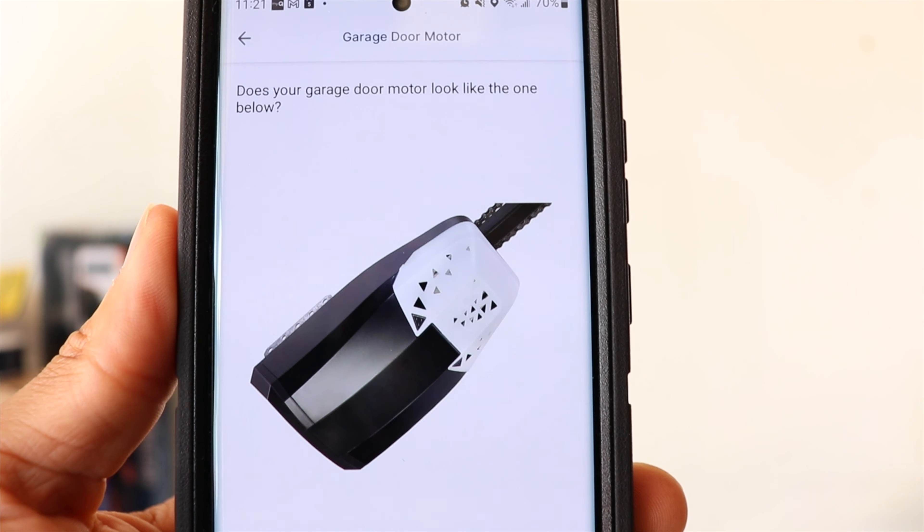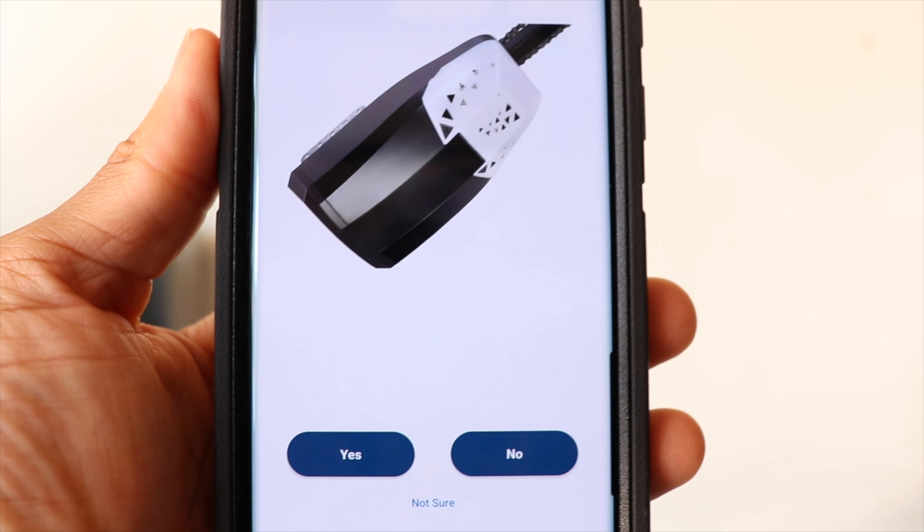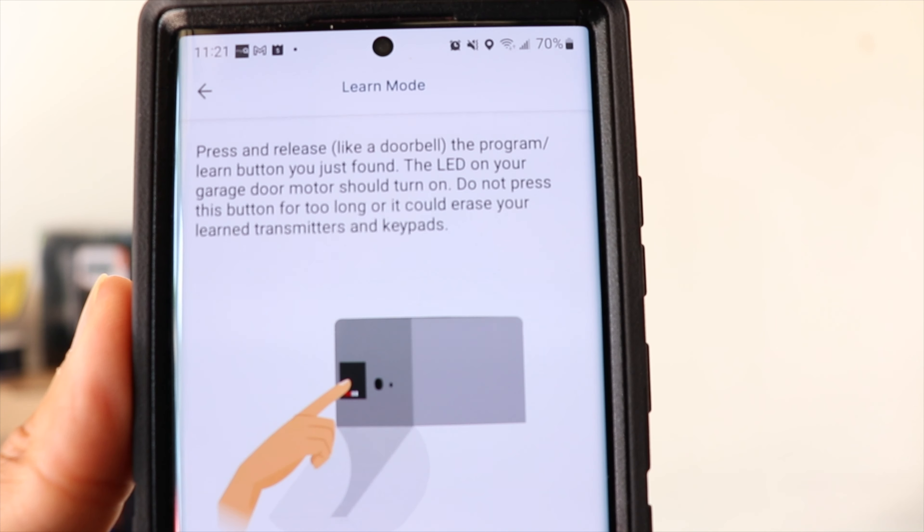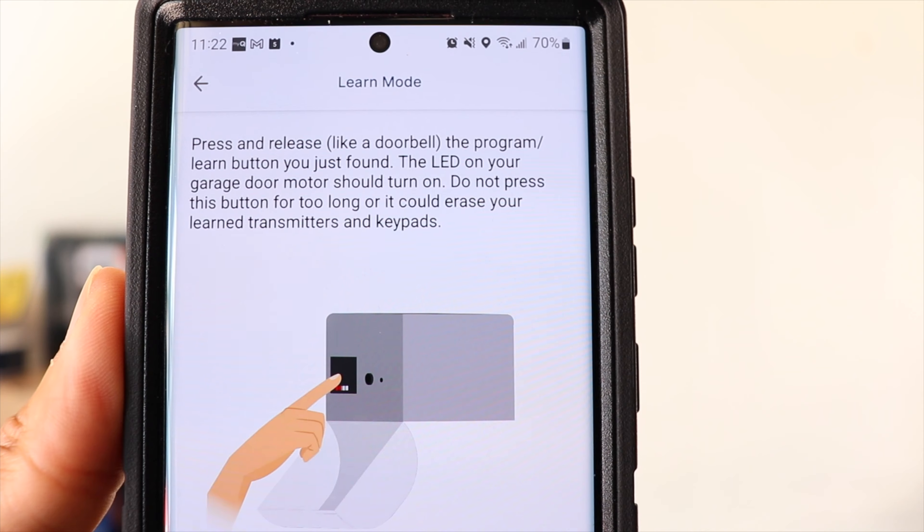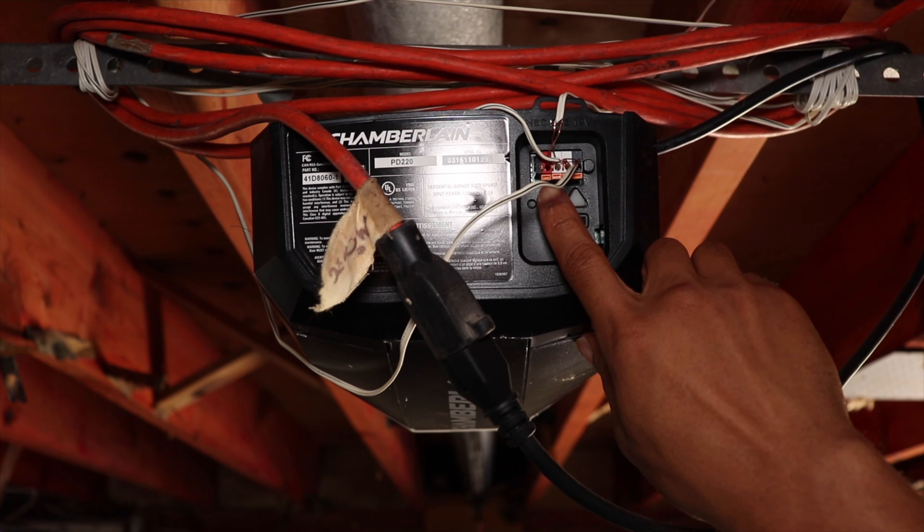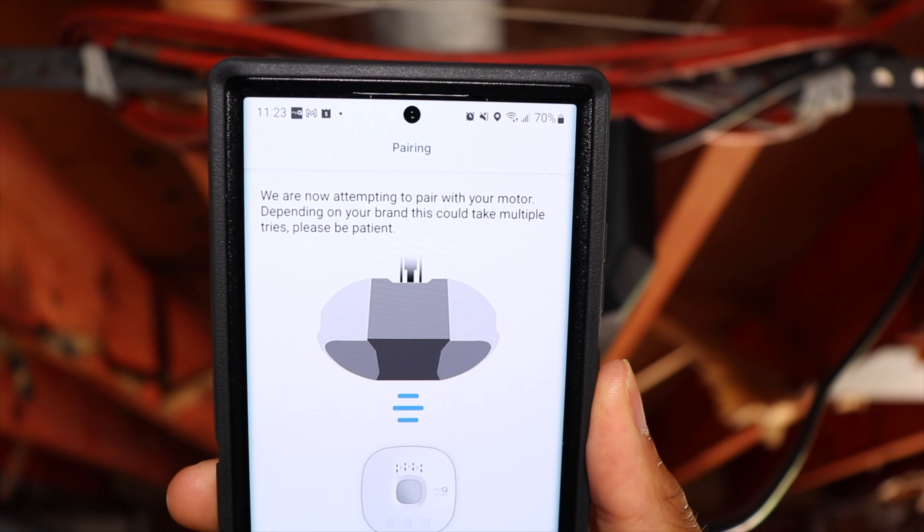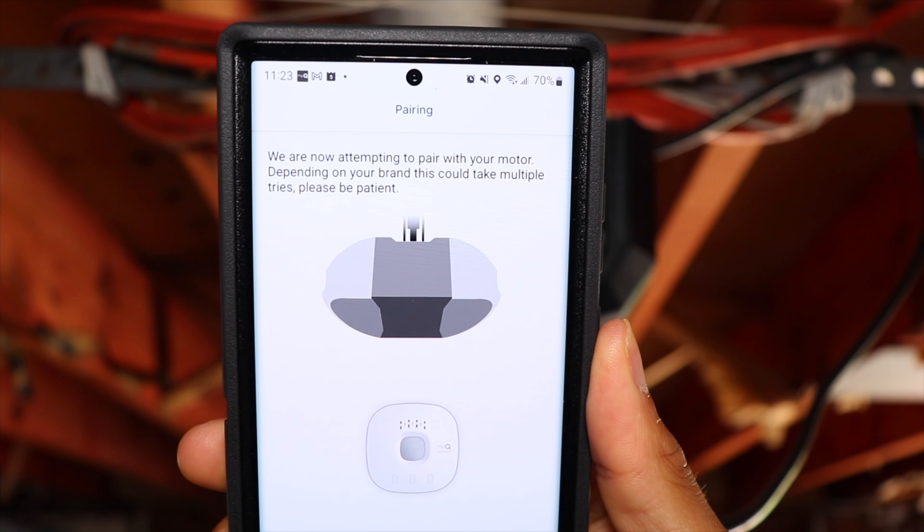After that, it shows me a picture of what appears to be the exact model of my garage door opener. After that, you want to go ahead and press the program button and the control hub will attempt to connect to the opener. If it's successful, it will automatically open the garage.